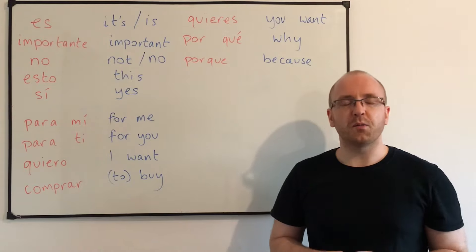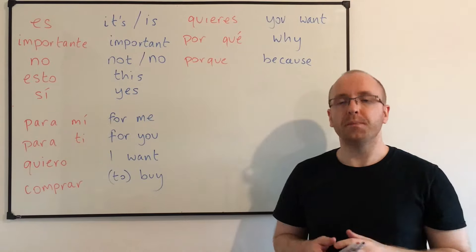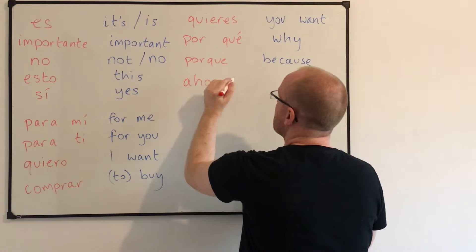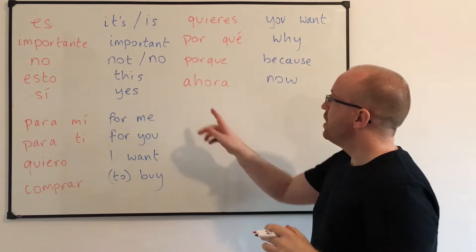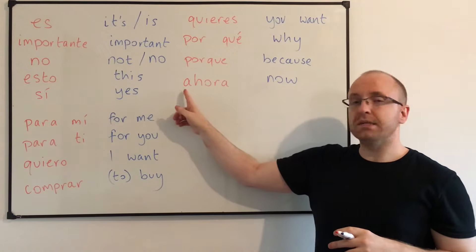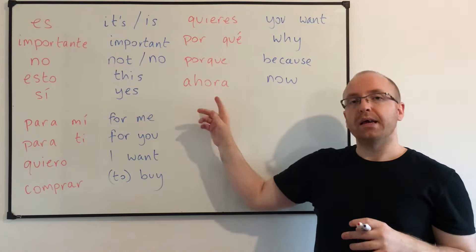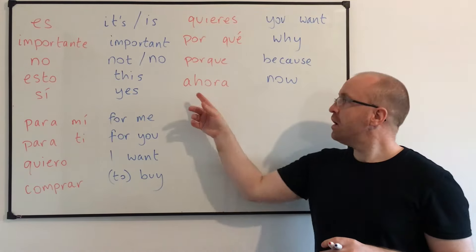Now the last word we're going to learn today is the word for 'now,' and that's 'ahora.' Ahora. The H in Spanish is never sounded, so it's just 'ahora.' These are two parts together — 'a' and 'hora,' so you're sort of saying 'to the hour.' Now. To the hour. Ahora.